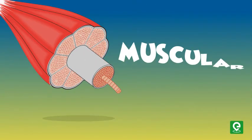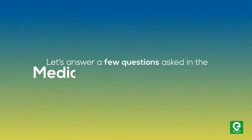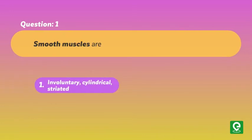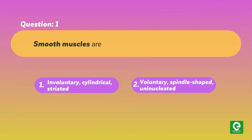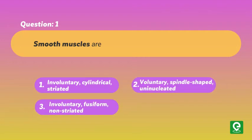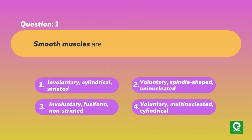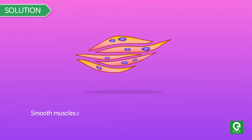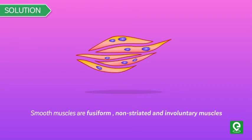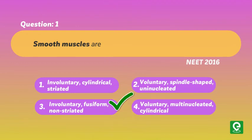Let's answer a few questions asked in medical entrance exams. Question one: Smooth muscles are — (1) involuntary, cylindrical, striated; (2) voluntary, spindle-shaped, uninucleated; (3) involuntary, fusiform, non-striated; or (4) voluntary, multi-nucleated, cylindrical. This question was asked in NEET 2016. Solution: Smooth muscles are fusiform, non-striated, and involuntary muscles, meaning their functions cannot be controlled directly. Hence, option three is the correct answer.